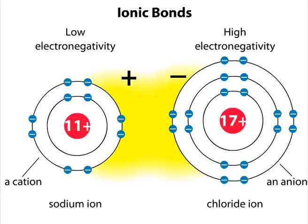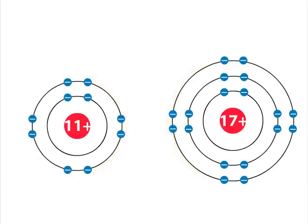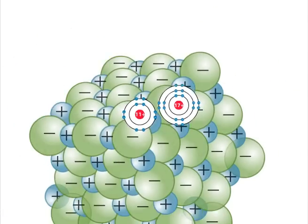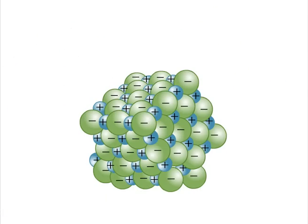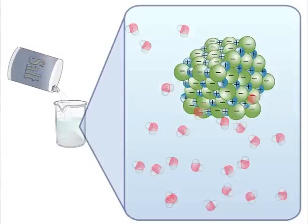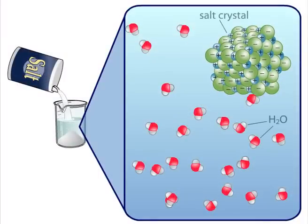In solid form, the ionic bonds between sodium and chloride ions are very strong, because the ions are so close together. These ions make up table salt.